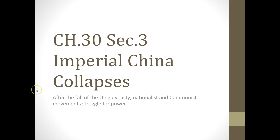This is a screencast over Chapter 30, the portion of the unit or chapter that covers the events in China — in particular the fall of the Qing Dynasty, and what ends up happening with Nationalist China and then the Communist movement that ends up in Civil War.